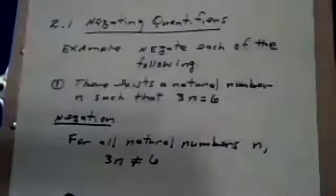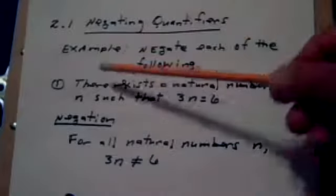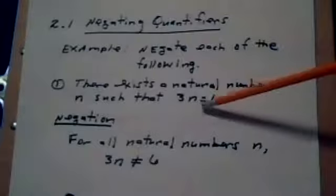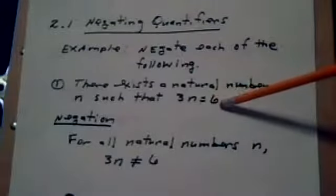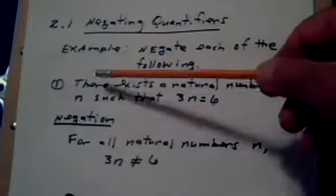To negate a quantifier, you negate it the following way. Notice the wording: 'there exists'—that's an existential—and notice what they're proposing: 3n=6. So the negation of this statement would be changing 'there exists' to 'for all,' and then changing 3n=6 to 3n≠6.